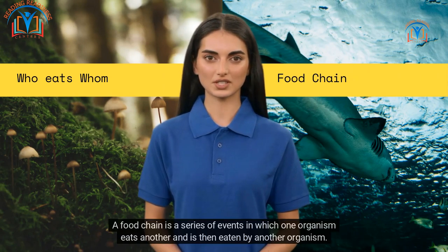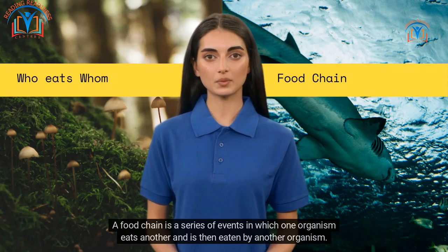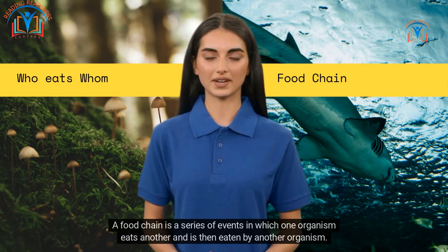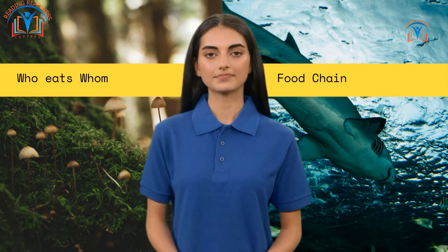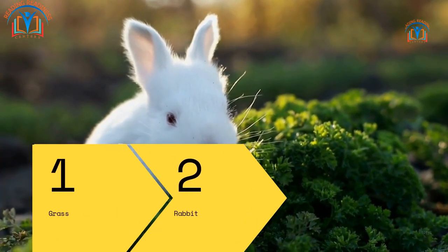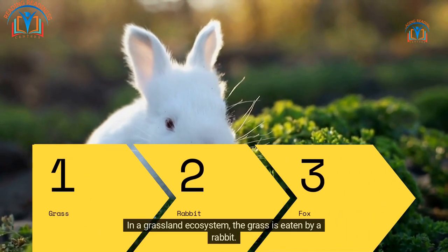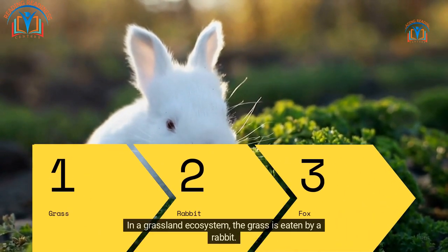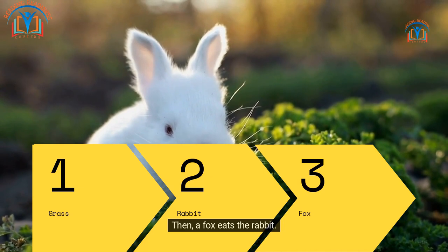A food chain is a series of events in which one organism eats another and is then eaten by another organism. Let's start with a simple example: in a grassland ecosystem, the grass is eaten by a rabbit, and then a fox eats the rabbit.